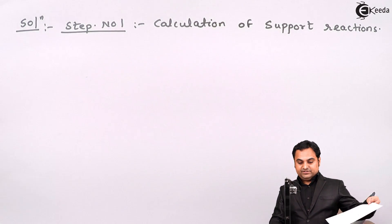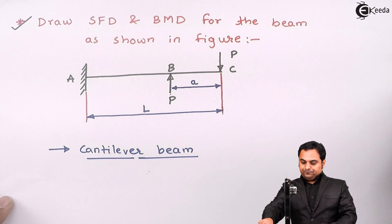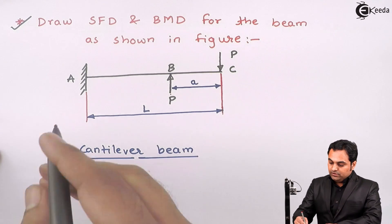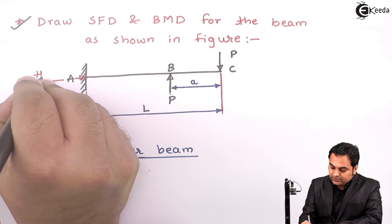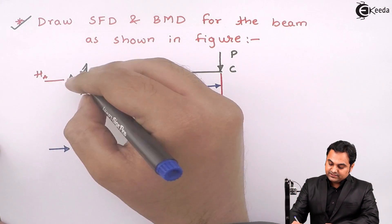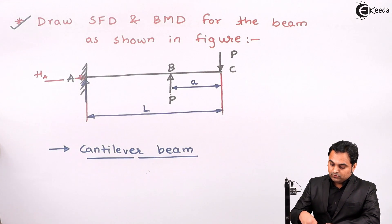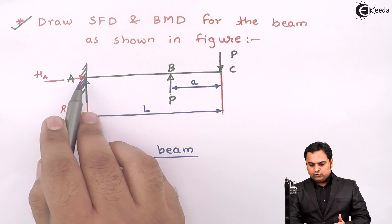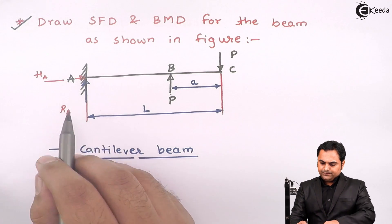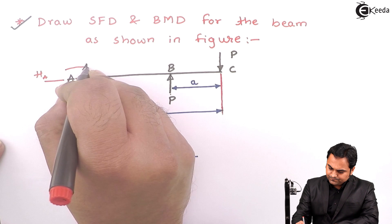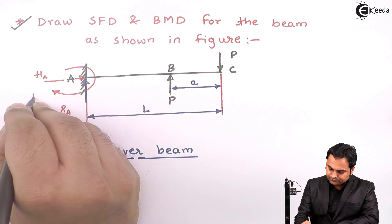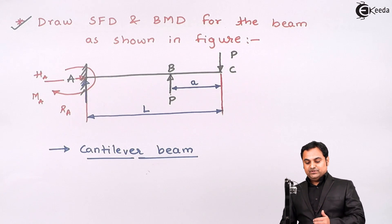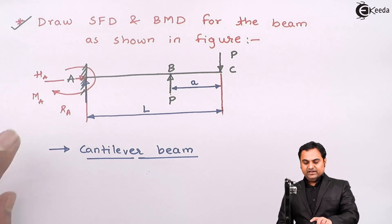Step number one is calculation of support reactions. At point A, the beam is fixed. Whenever we have a fixed beam, at that location we have three kinds of reactions: first, horizontal reaction H_A; then there is vertical reaction R_A. It means for a cantilever beam, it cannot move in horizontal or vertical direction at the fixed location. At the same time, there is a moment at point A, meaning this cantilever beam cannot rotate about point A. So there are three kinds of reactions.